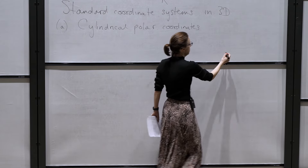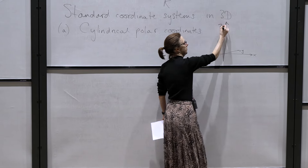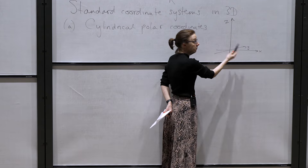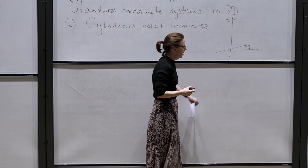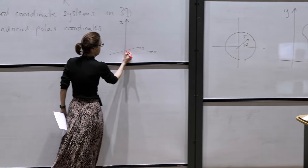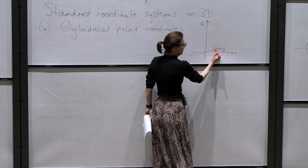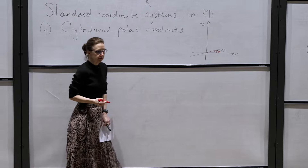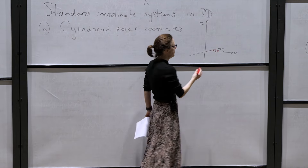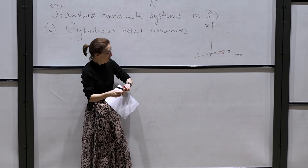There are some standard coordinate systems in 3D. The first is cylindrical polar coordinates. In cylindrical polar coordinates, you have the xy-plane in the usual Cartesian sense and the z direction going up. What cylindrical polar coordinates do is give you polar coordinates in each transverse plane: a point is denoted by its distance from the origin — the radius r — and the angle it makes with the x-axis, theta. You can tell where a point is in three-dimensional space by its value of r, theta, and z.